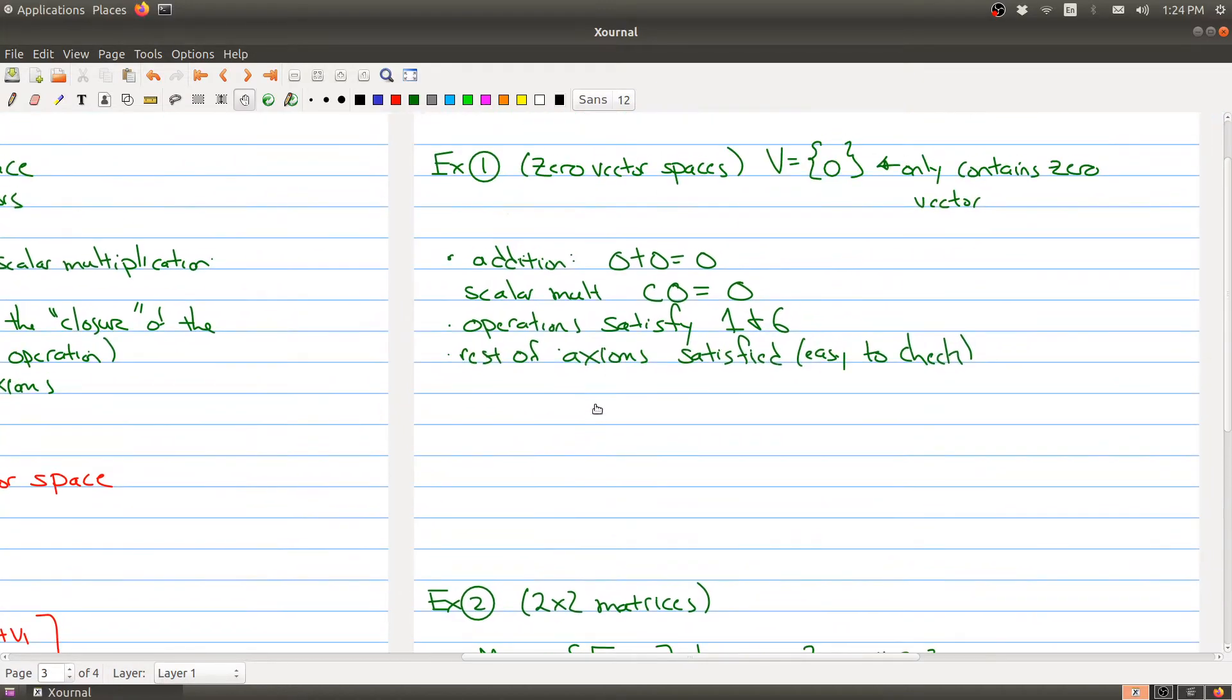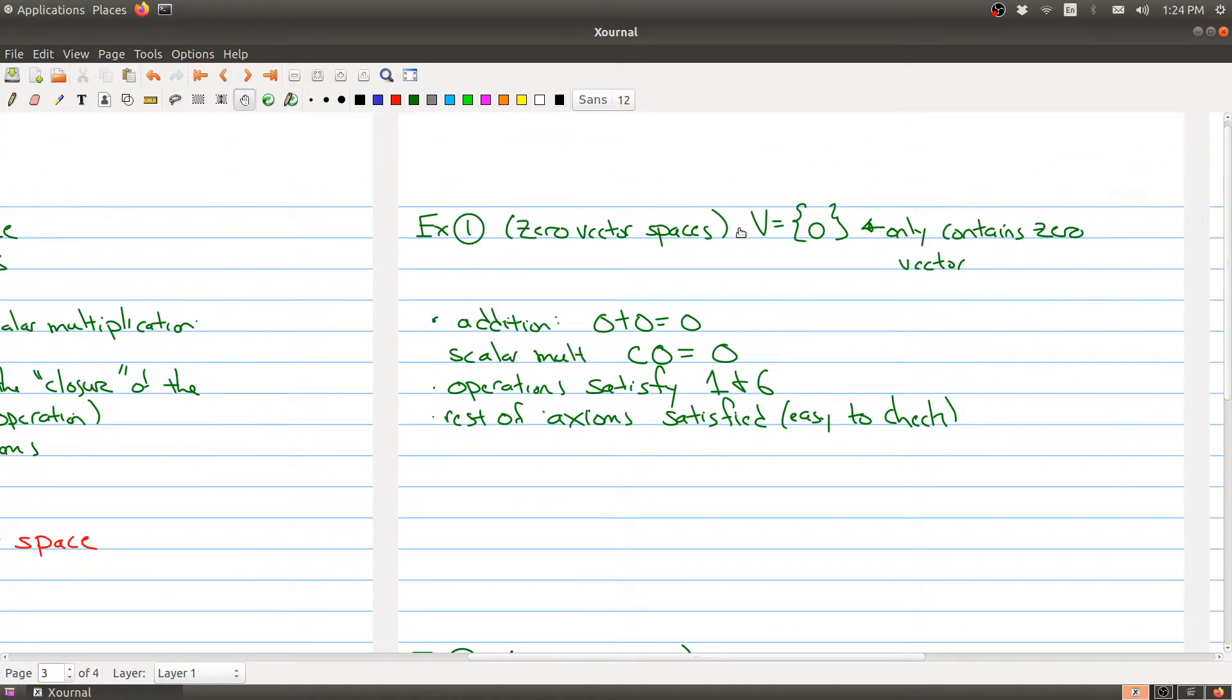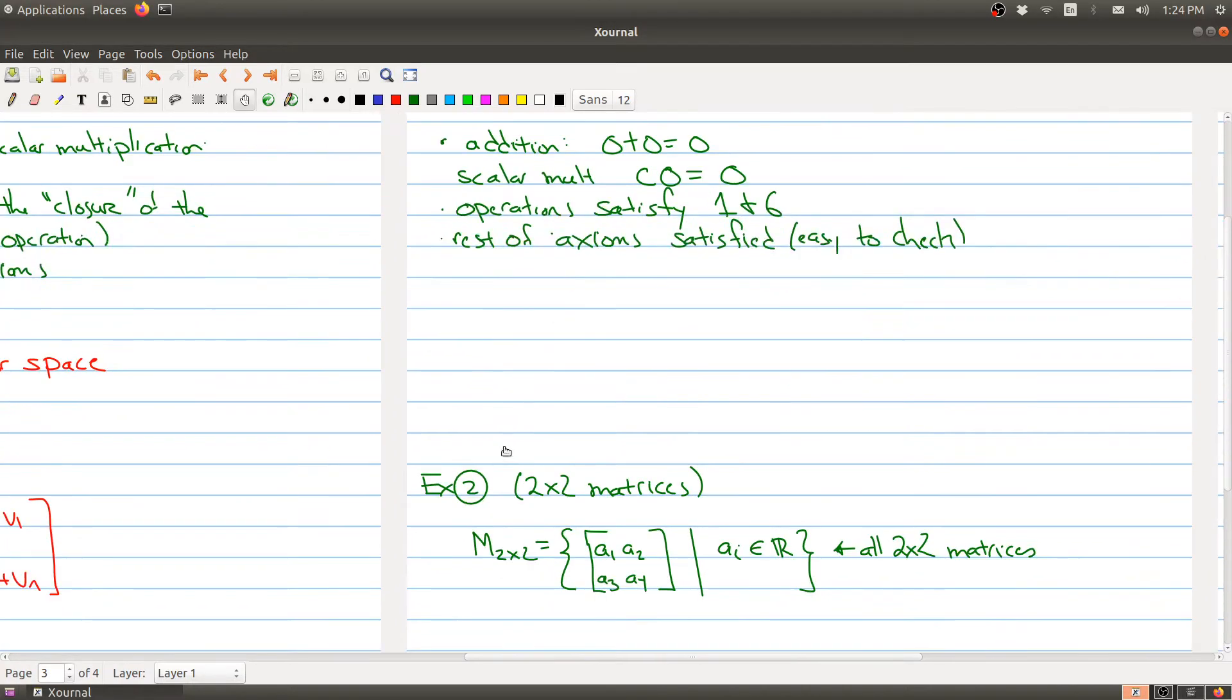So this is an example of a vector space. If you consider just a set containing the zero vector, that's an example of a vector space.